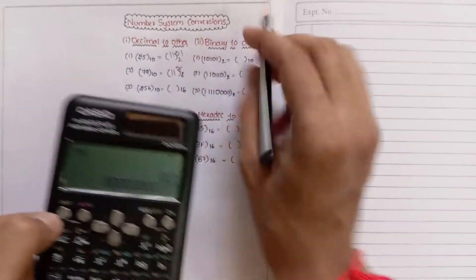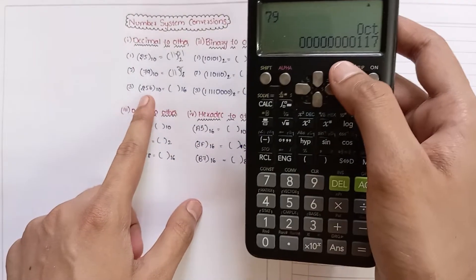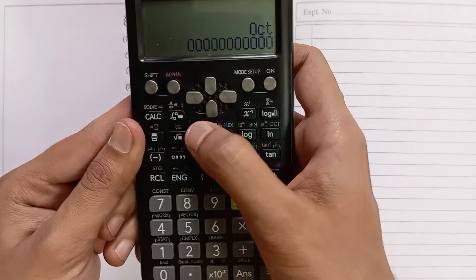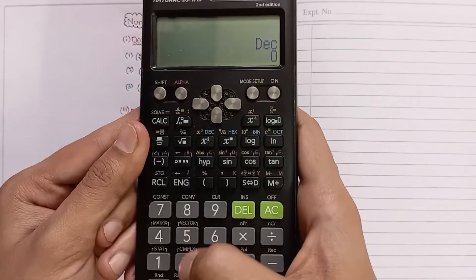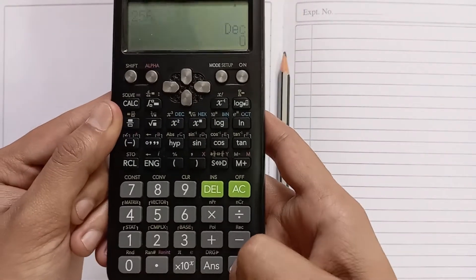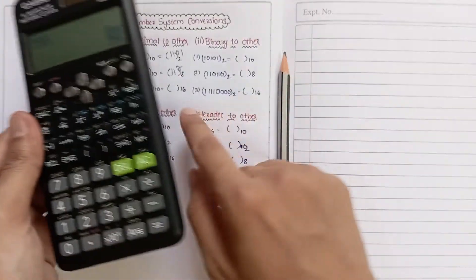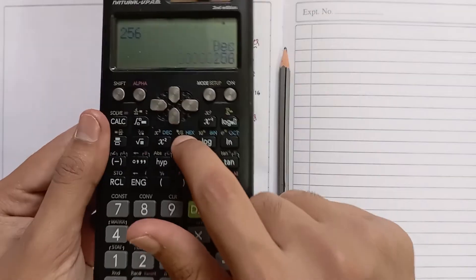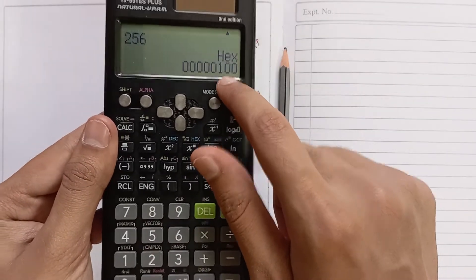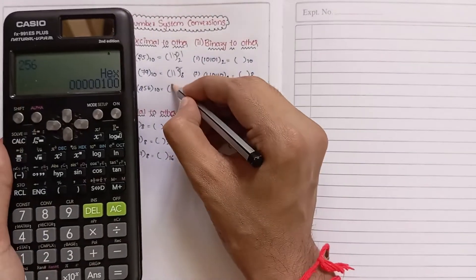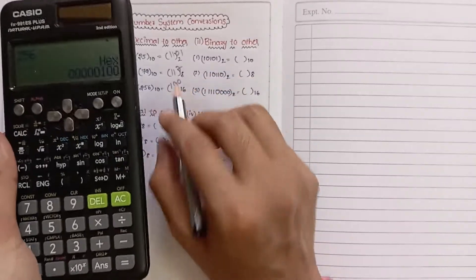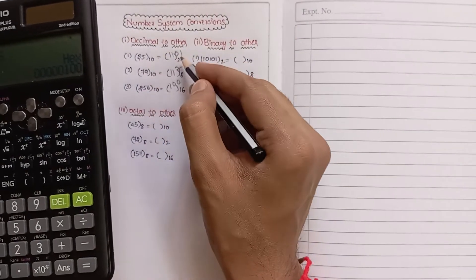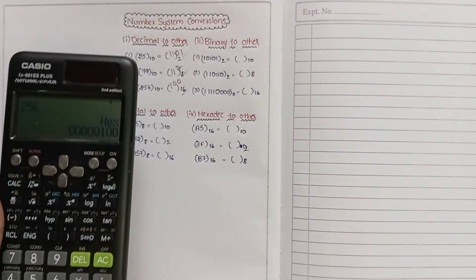Now we will convert 256 to hexadecimal. Press decimal, enter 256, and press equal to store it. Select hexadecimal — the result is 100. So 100 is the required hexadecimal number for the decimal number 256. In this way we converted decimal numbers to binary, octal, and hexadecimal.